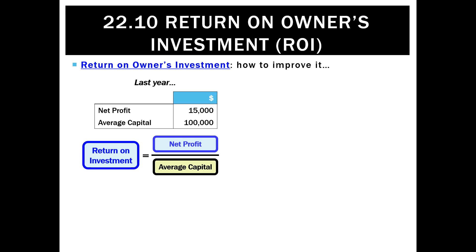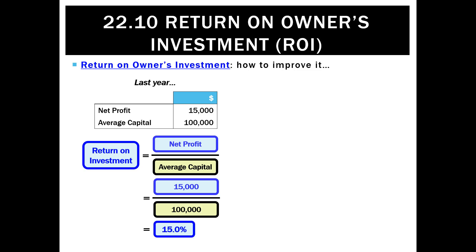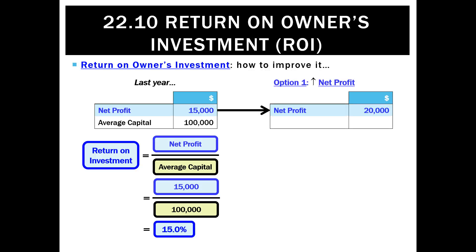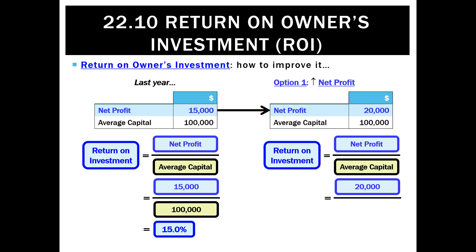Looking at how to improve ROI, we can either increase net profit. So if last year net profit was 15,000 with capital of 100,000, that equals an ROI of 15%. We can make that go up by using our capital better — using the same amount of capital but generating more net profit of 20,000 — and that'll flow through to an ROI of 20%.